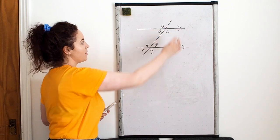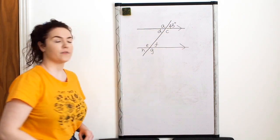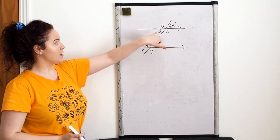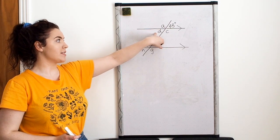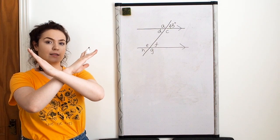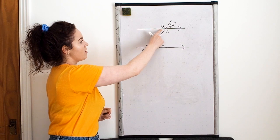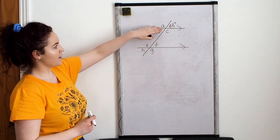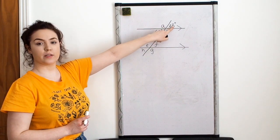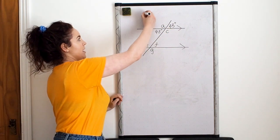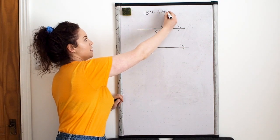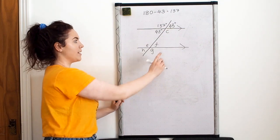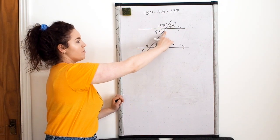Because all these angles are related, if I'm given just one of them I can find all of the other seven. Say I'm told that B is 43 degrees. Focusing on the four angles at the top intersection: 43 is opposite to D, and vertically opposite angles — angles opposite each other when two lines intersect — are equal, so D is also 43 degrees. Angles on a straight line add up to 180 degrees, so A plus 43 equals 180, meaning A is 180 take away 43, which is 137. And C is opposite to A, so C is also 137.